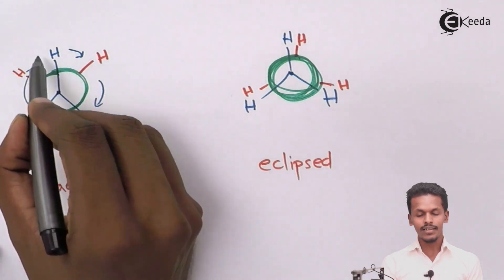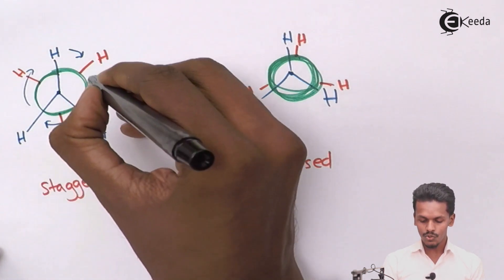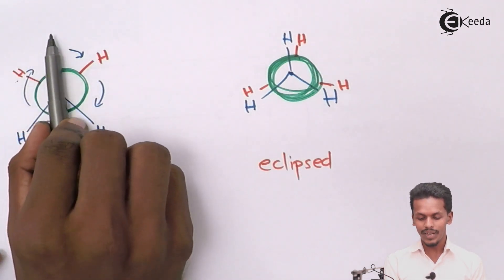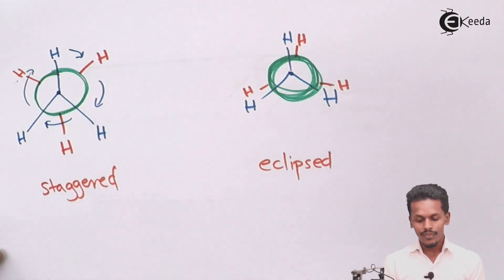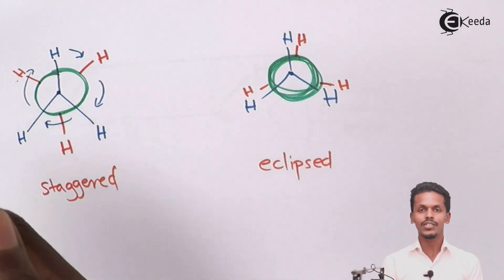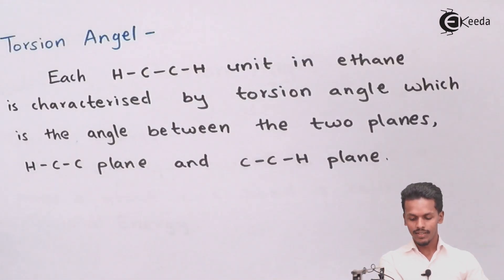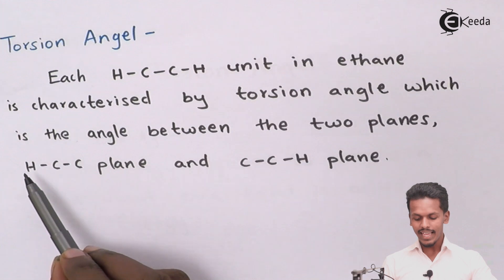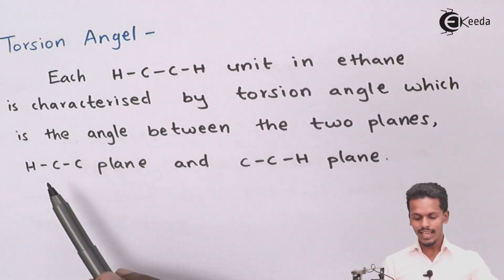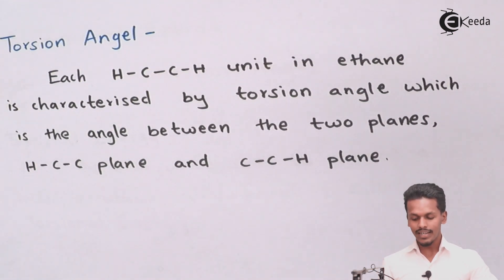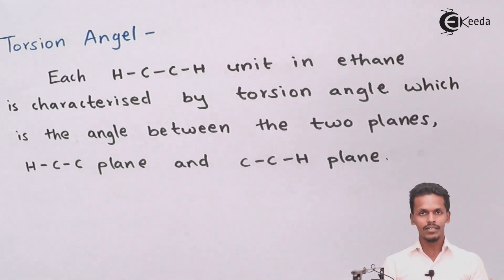In the Sawhorse projection, there is a certain angle between two hydrogens, or between two planes — one hydrogen present in one plane and the other hydrogen in another plane. The angle between them is basically known as the torsional angle: the angle between the HCC plane and CCH plane of two different carbon atoms.